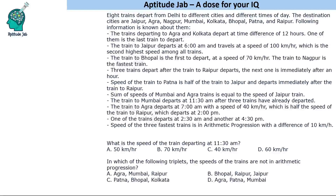Welcome to Aptitude Lab. This is a scheduling-based puzzle. There are eight trains that depart from Delhi to different cities at different times. We have to fill three things: the city name, the time, and the speed.